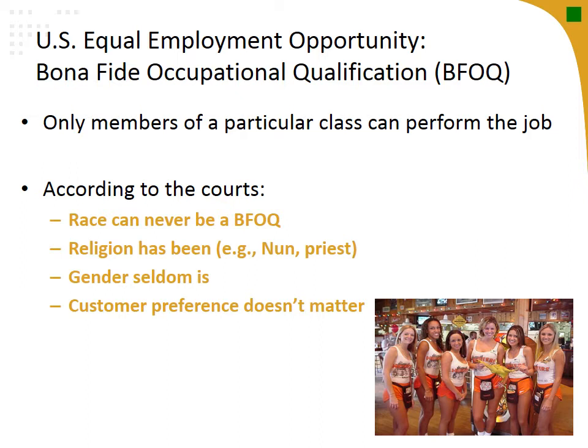Examples of a BFOQ: only a female can be a wet nurse, only a male can be a sperm donor. Non-BFOQs: if UPS only hired males as package handlers assuming they're stronger, the BFOQ would actually be strength — you could just do a strength test regardless of gender. According to the courts, race can never be a BFOQ. Religion has been used — churches can require that priests are Catholic, but cannot require that all clergy are Catholic. Gender is seldom a BFOQ, and customer preference does not matter. In 1989, Caesars Casino in Atlantic City was fined $250,000 for removing Black and female card dealers to appeal to rich old white male clients.